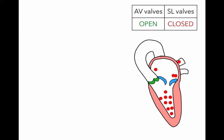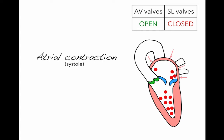Blood continues to come in from the pulmonary veins, and the second phase of ventricular filling will occur. We call this phase atrial contraction, also referred to as atrial systole. This decreasing of the chamber size increases the pressure, pushing the remainder of the blood into the ventricles and completing ventricular filling. About 20% of blood in the ventricles comes from the atria contracting.